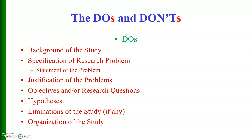First I would like to highlight the do's — what we need to do. In the introduction chapter we need to give the background of the study, followed by specification of the research problem, also called the statement of the problem. We may also need justification of the problem, and after that we give objectives and research questions, which may be followed by hypothesis, limitations of the study, and finally the organization of the study.